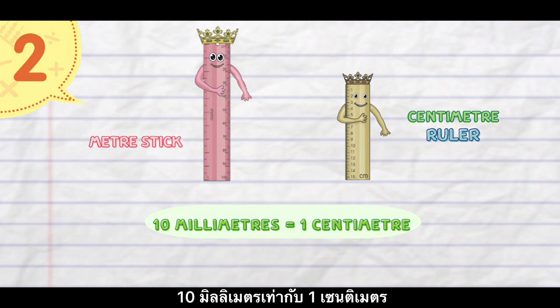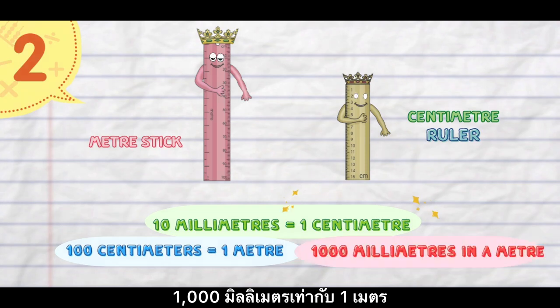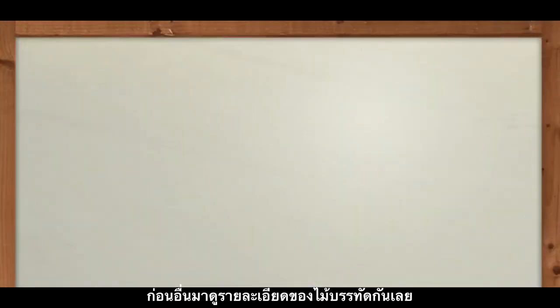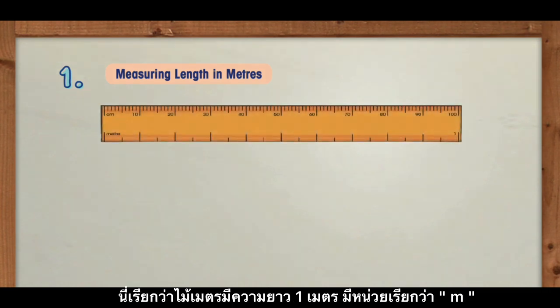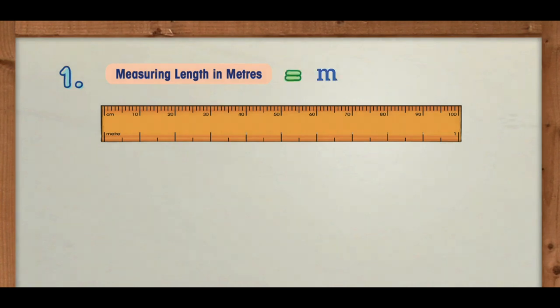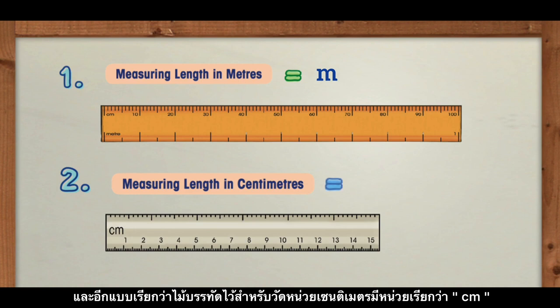There are 10 millimeters in a centimeter and 100 centimeters in one meter, which means there are 1000 millimeters in a meter. If you look closer, the meter stick uses the unit of meters to measure length, written as M. The centimeter ruler measures length in centimeters, written as CM.